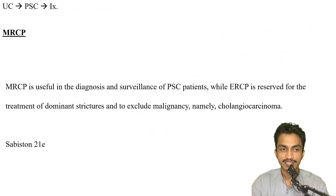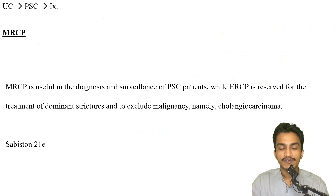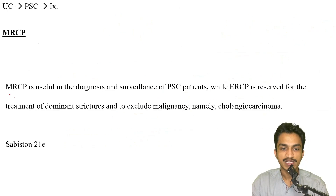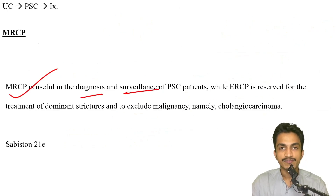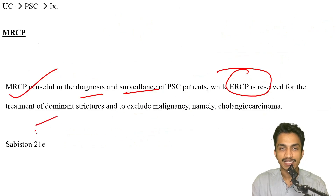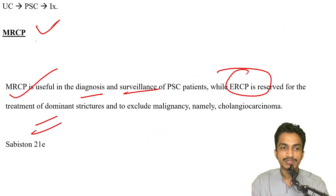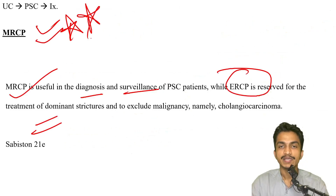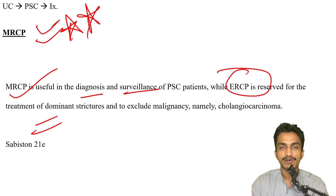Patient with ulcerative colitis and primary sclerosing cholangitis — what is the investigation of choice? MRCP is done for diagnosis and surveillance. ERCP is only done for management purposes. For investigation we always go for MRCP — straightforward answer.